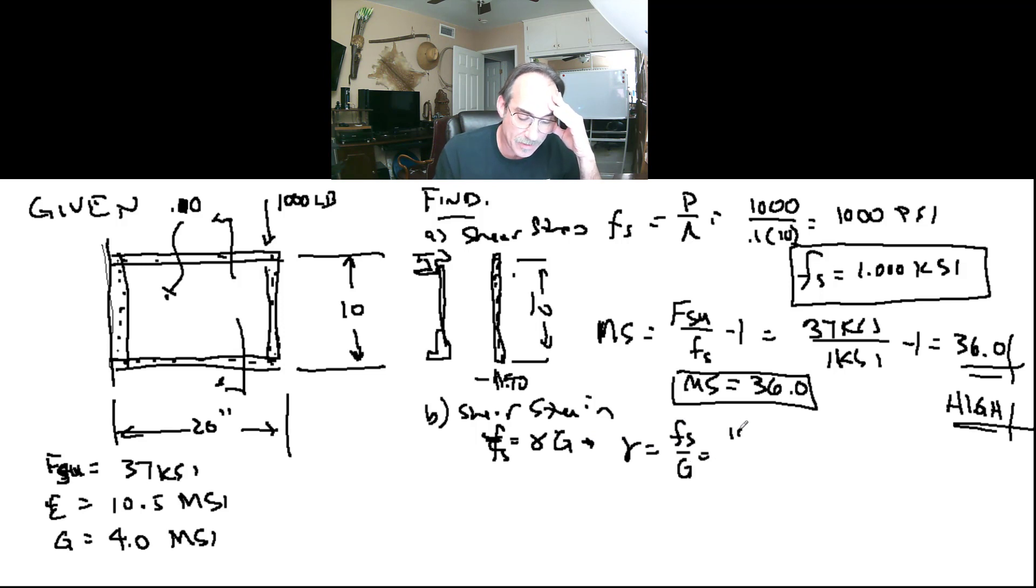That is just 1,000 PSI divided by our 4 million PSI. And we would find out that our shear strain is 0.00025 inches per inch. And we would box that puppy.